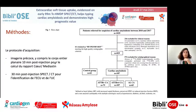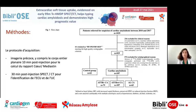Cette scintigraphie osseuse a été faite avec un cliché précoce à 10 minutes post-injection, permettant de calculer le rapport cœur sur médiastin. S'il était supérieur à 1,21, il posait le diagnostic d'amylose à transthyrétine. Des clichés à 30 minutes avec une tomoscintigraphie permettaient, sur les clichés corps entiers, d'établir la fixation cardiaque et extracardiaque.